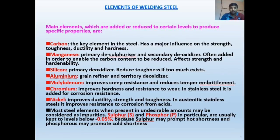Aluminum is a very important grain definer and tertiary deoxidizer. Some percentage of aluminum in steel is called killed steel or semi-killed steel — 'killed' refers to it being a grain definer. Molybdenum improves creep resistance and reduces temper embrittlement. Chromium improves hardness and corrosion resistance; manganese, aluminum, molybdenum, and chromium are commonly found in stainless steel filler metals.